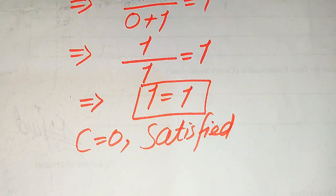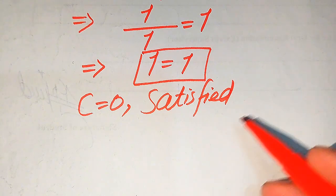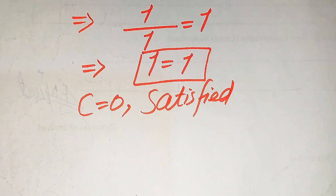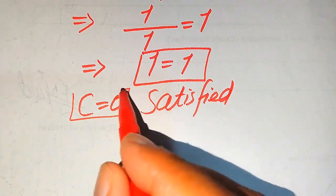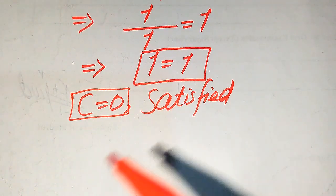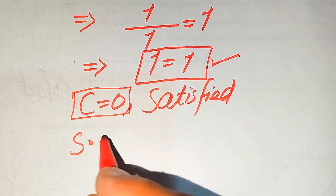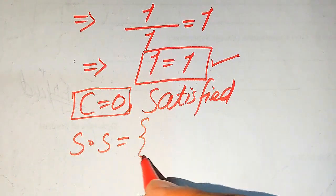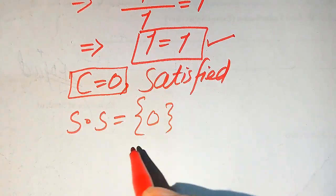Let me explain the difference between solution and extraneous root. A root which does not satisfy the given equation is called an extraneous root. Unfortunately this question does not have any extraneous root. A root which does satisfy the given equation is called a solution — like c equals 0 here. So c equals 0 is the solution and it lies in the solution set of this question.